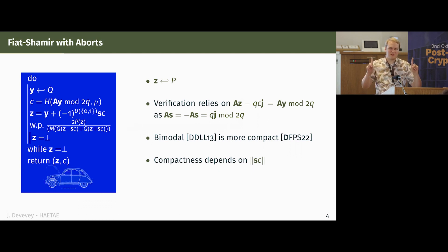So this is where the bimodal name comes from, because you have two possible centers for z. And the goal is now to erase this center, because if you were to release z at this point, then you would be leaking the center, so you would be leaking your secret key. So we have an ugly rejection step, and you have to believe me when I say that this is done so that z in the end follows an independent distribution p, so you erased the centers.